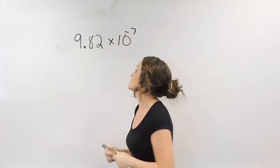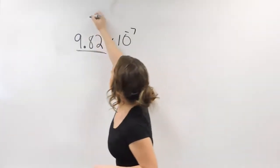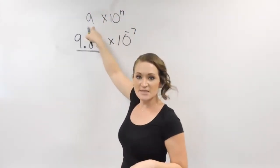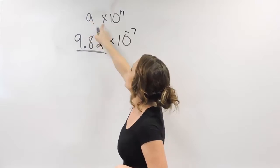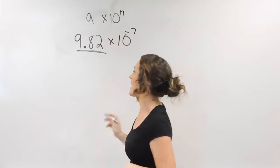All right, so the first thing you need to do is this number, this decimal over here to the left, that's actually called your a. Scientific notation looks something like this: a times 10 to the nth. You're always going to have some decimal times 10 to some power.